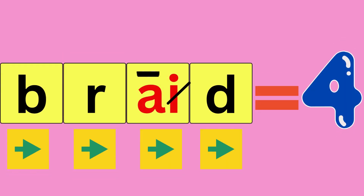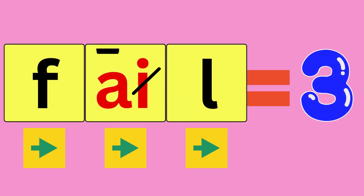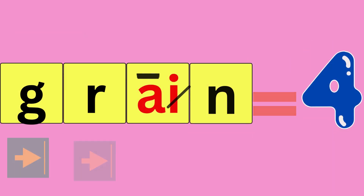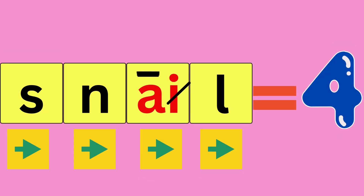Braid: B-R-A-D, braid. How many sounds did you hear? Four. Fail: F-A-L, fail. How many sounds did you hear? Three. Grain: G-R-A-N, grain. How many sounds did you hear? Four. Snail: S-N-A-L, snail. How many sounds did you hear? Four.